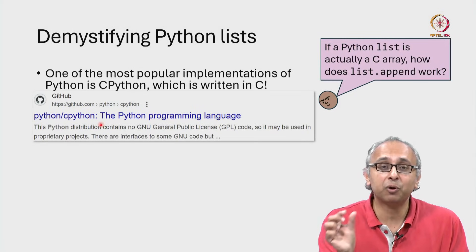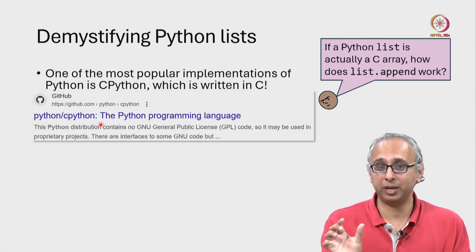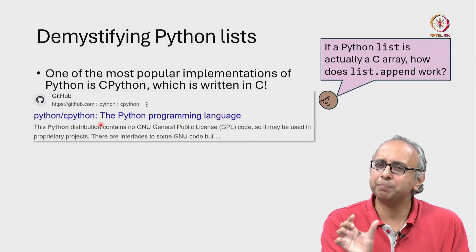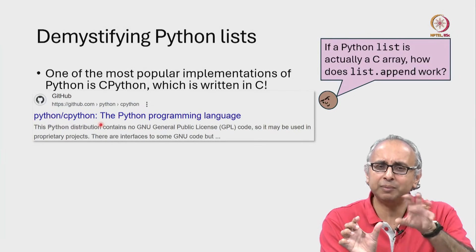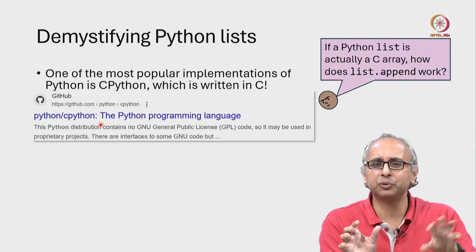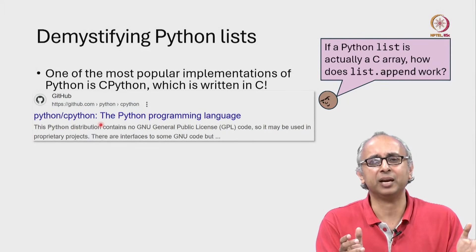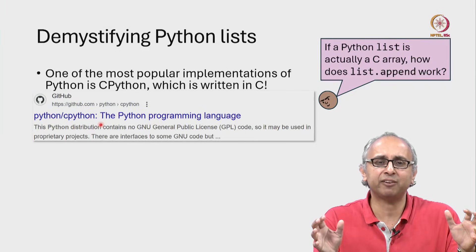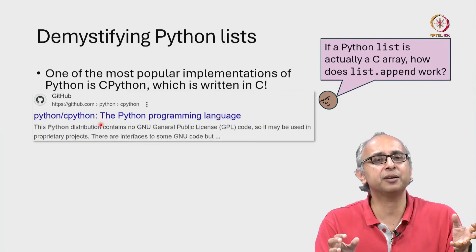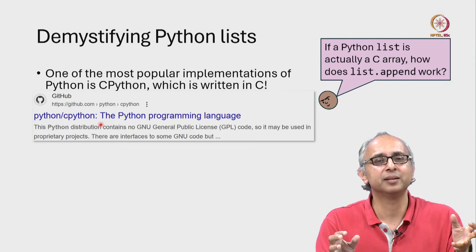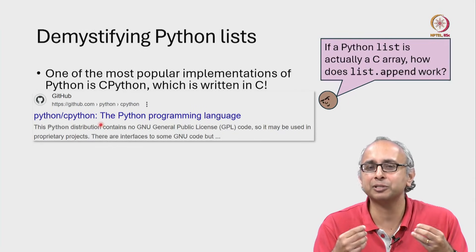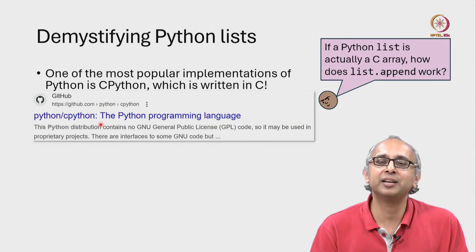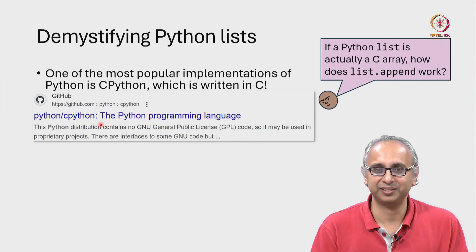But each time we call malloc we have some fixed size. In Python we seem to be able to call append any number of times. What would happen if that fixed amount ran out of space? How does list.append actually work? Well, we are going to try and demystify this.